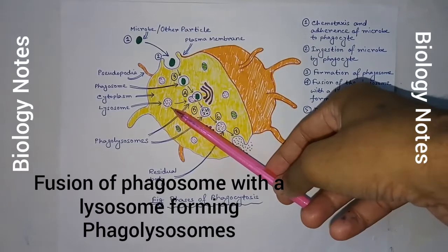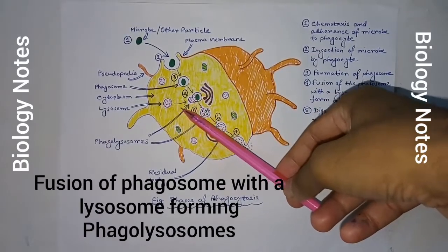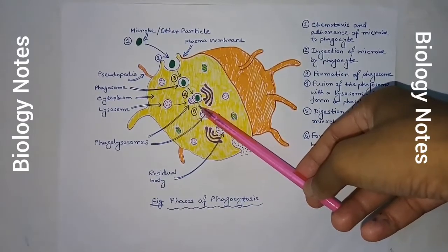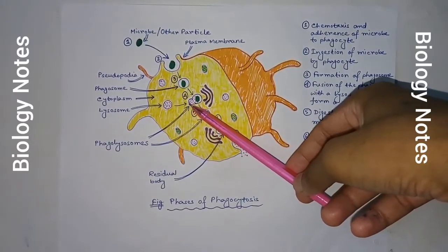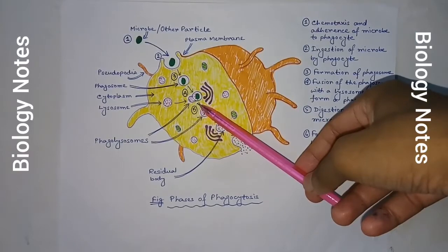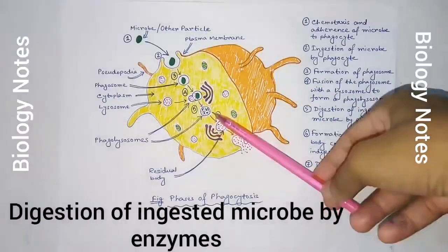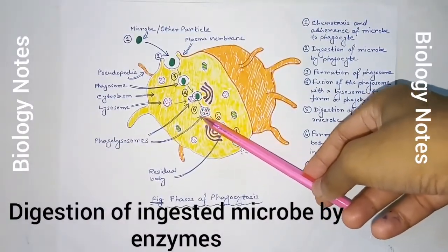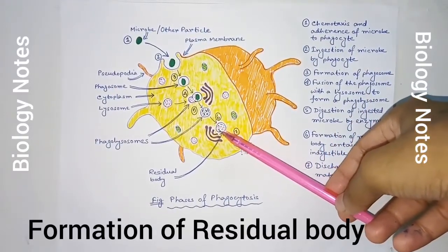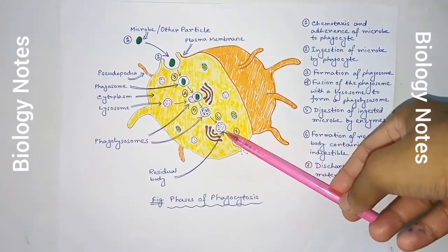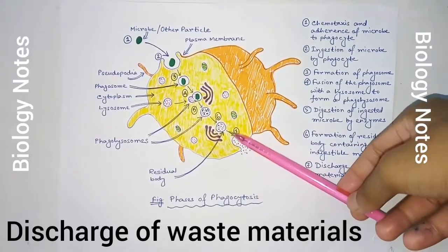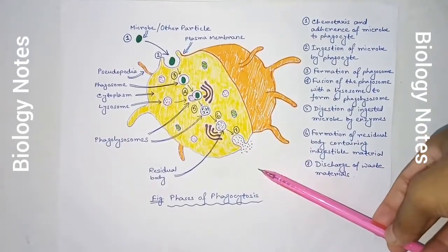In the fourth step, lysosomes move toward the phagosome and fuse with it, forming a phagolysosome. Lysosomes contain various digestive enzymes, microbial chemicals, and toxic oxygen radicals which ultimately destroy the pathogen. In the fifth step, digestion of the ingested microbe by lysosomal enzymes takes place. In the sixth step, residual bodies are formed, which are indigestible materials. The last step is the discharge of waste materials from the macrophage.